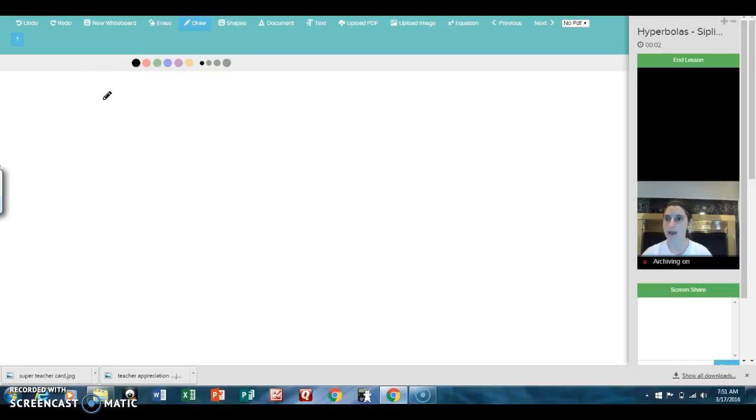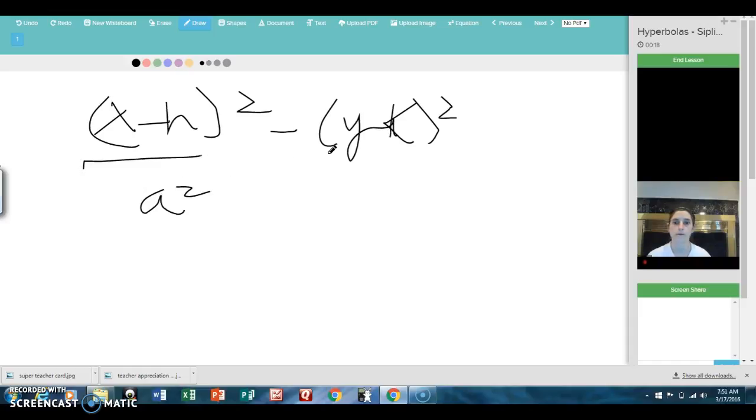First, we'll talk about graphing a hyperbola that opens along the x-axis direction, which looks like this: x minus h squared minus y minus k squared. This is over a squared, this is over b squared, and it's all equal to 1. When something looks like this, and the x is first,